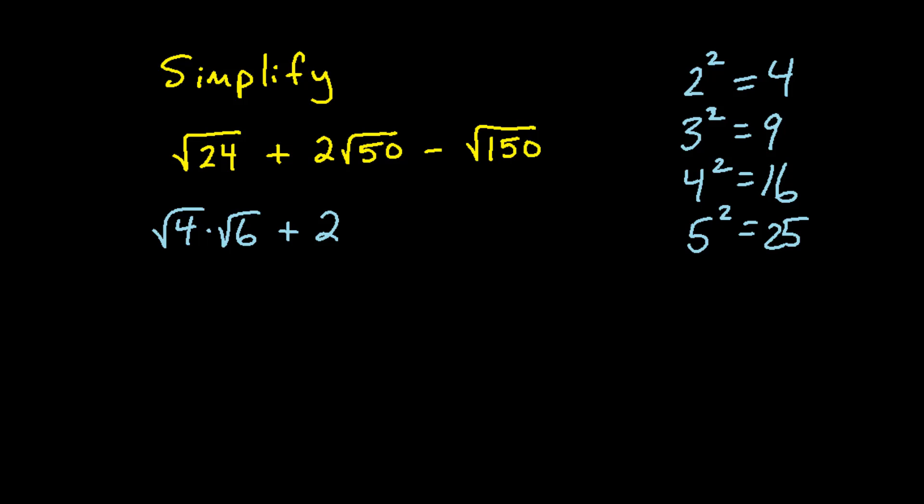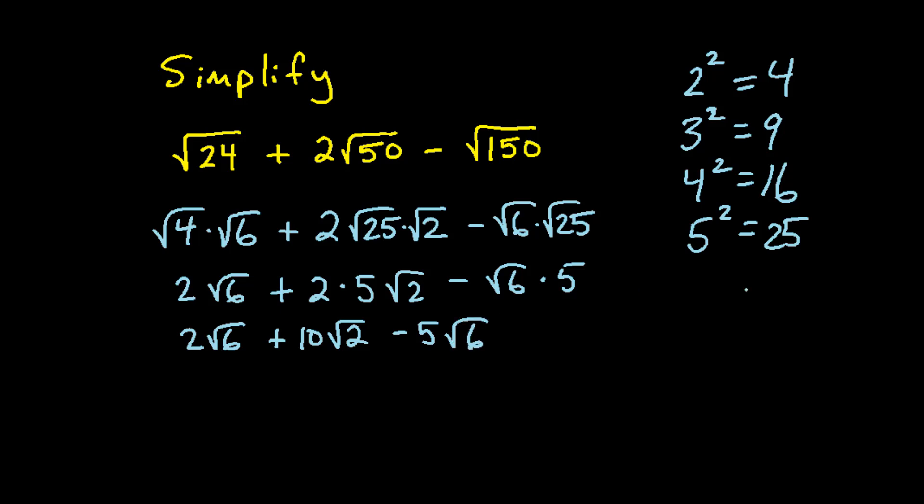25 times 2 is 50, and 25 also goes into 150 six times. Now we should perform the perfect squares. Square root of 4 is 2, and square root of 25 is 5, and square root of 25 on the next term is also 5. We should simplify and write all the numbers in front of the radicals. So 2 square root of 6 is simplified, 2 times 5 is 10, and that goes in front of the square root of 2, and the 5 factor goes in front of square root of 6.